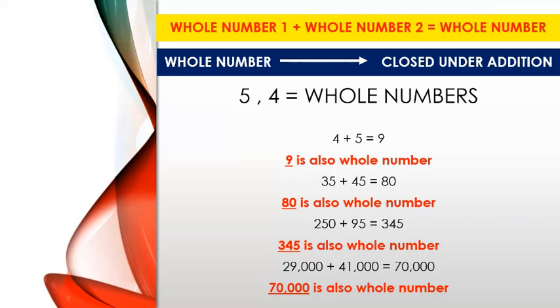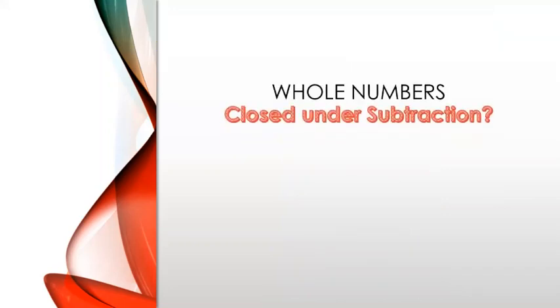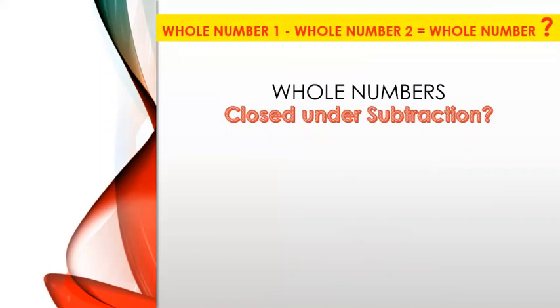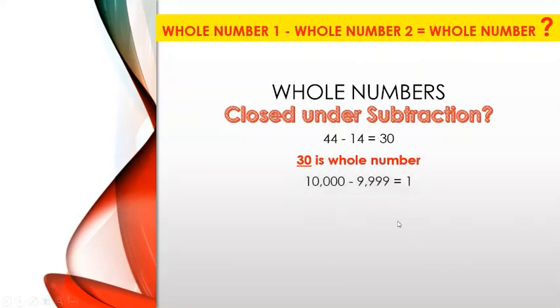Are whole numbers closed under subtraction? When we subtract two whole numbers, do we always get a whole number? 44 minus 14 is equal to 30 — we subtracted two whole numbers and got a whole number. Similarly, 10,000 minus 9,999 gives us 1, which is also a whole number.